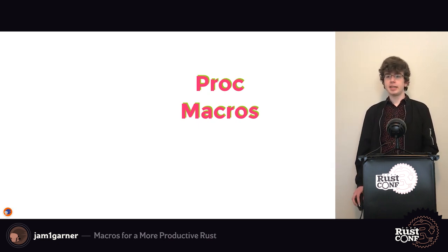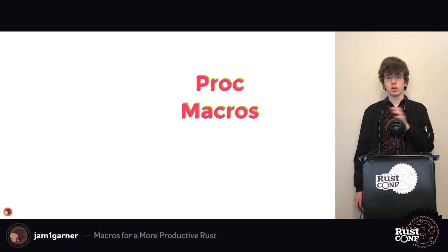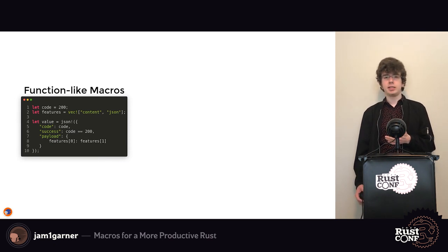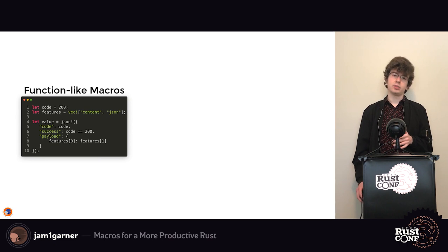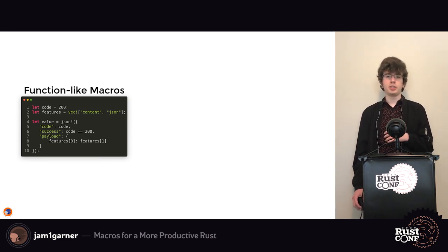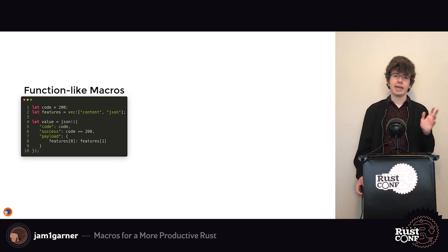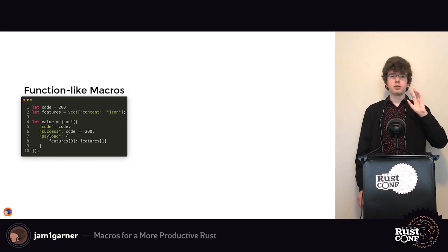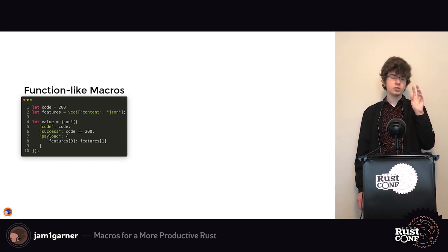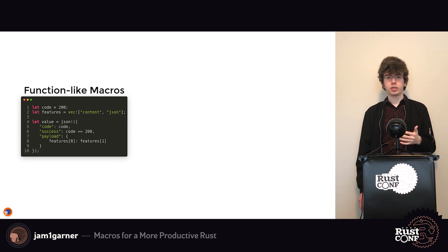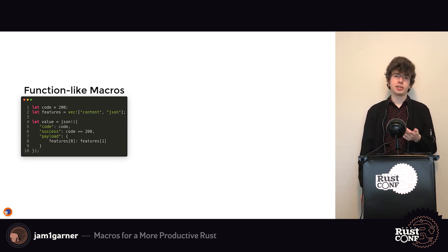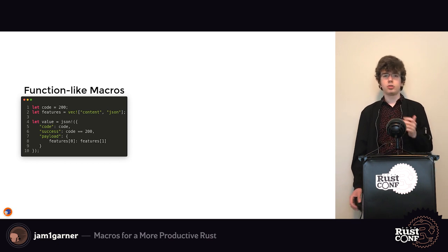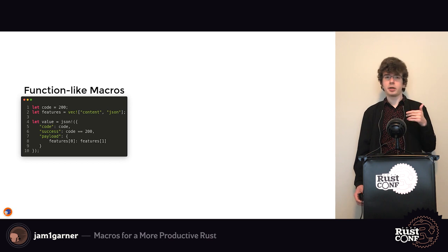Proc macros are the other type of macro, different from macro_rules. The general idea is that you write another Rust program which takes in a series of tokens and returns a series of tokens. Function-like proc macros are basically the same as macro_rules macros but more powerful because you can have arbitrary Rust logic for modifying your token stream. An example is the `json!` macro from Rocket, which lets you write JSON inline in your code and use Rust expressions as values or keys.